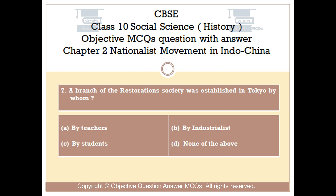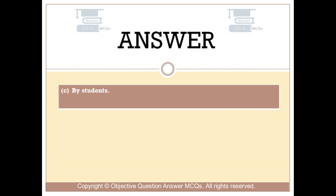Question number 7: A branch of the Restoration Society was established in Tokyo by whom? Option A: By teachers. Option B: By industrialists. Option C: By students. Option D: None of the above. The right answer is Option C: By students.